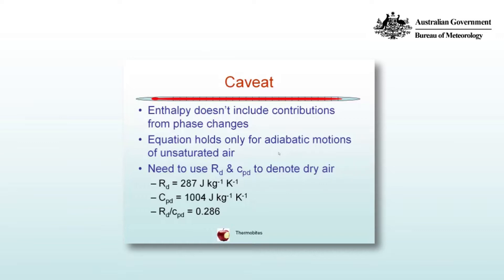So what we'll do is use rd and cpd to denote the fact that we have dry air. The specific gas constant for dry air is 287 joules per kilogram per kelvin, and that's a value worth memorizing. And cpd, the specific heat at constant pressure for dry air, is 1004 joules per kilogram per kelvin. So their ratio, as appears in Poisson's equation, is 0.286.